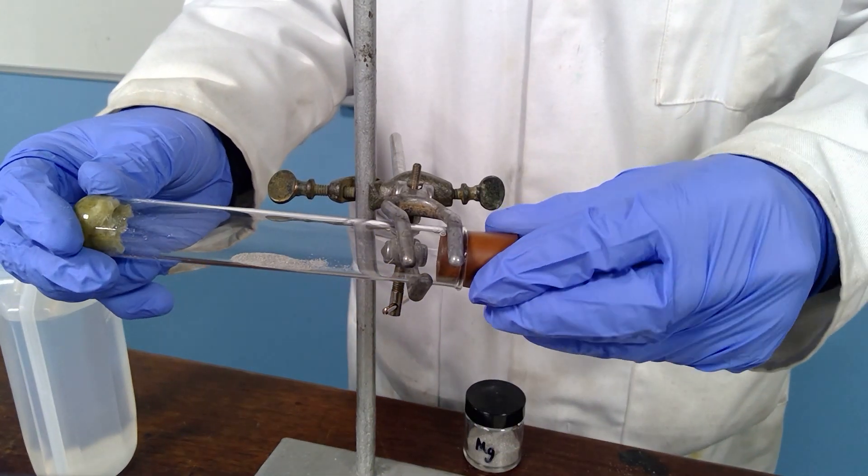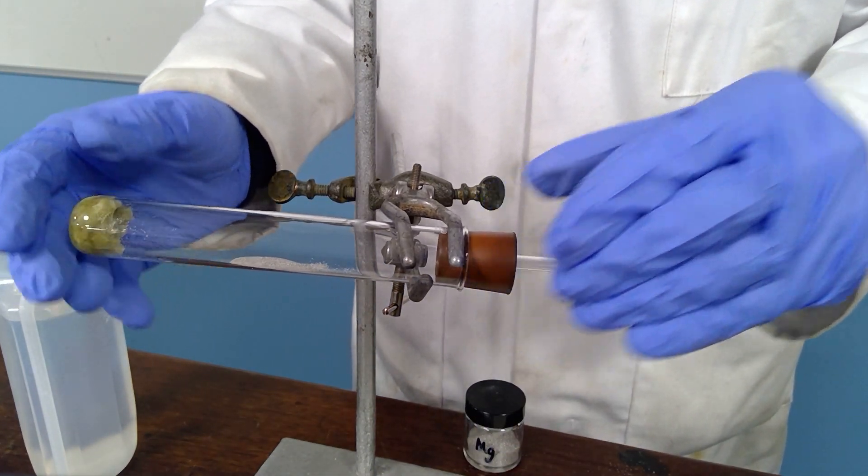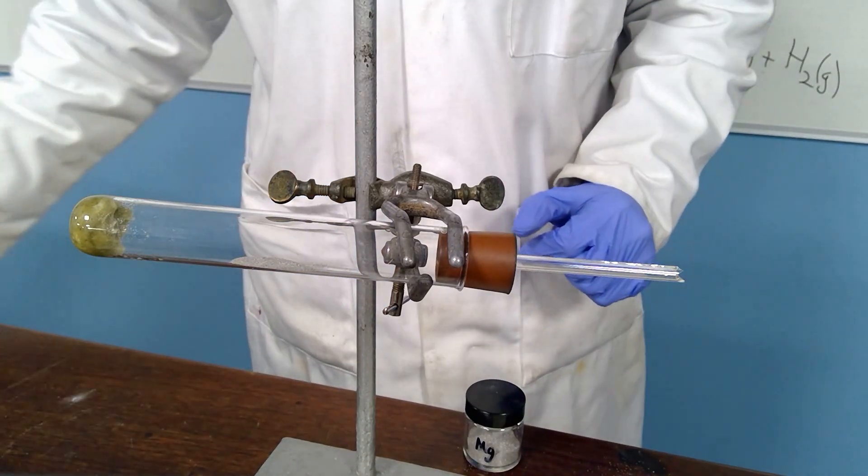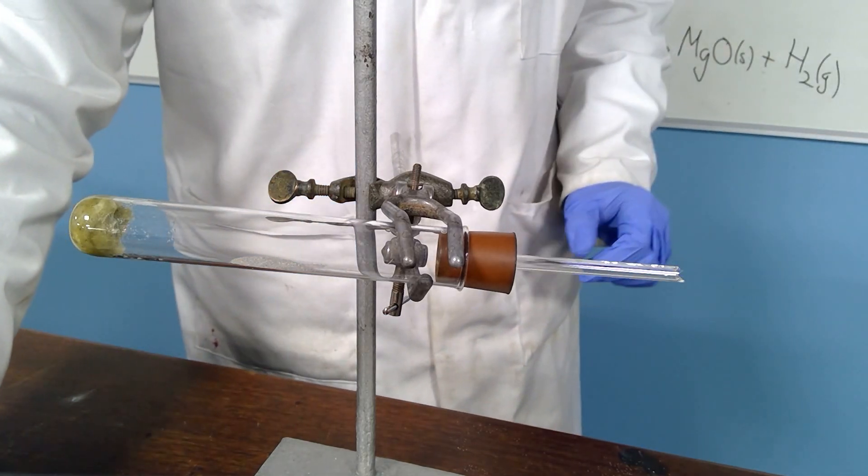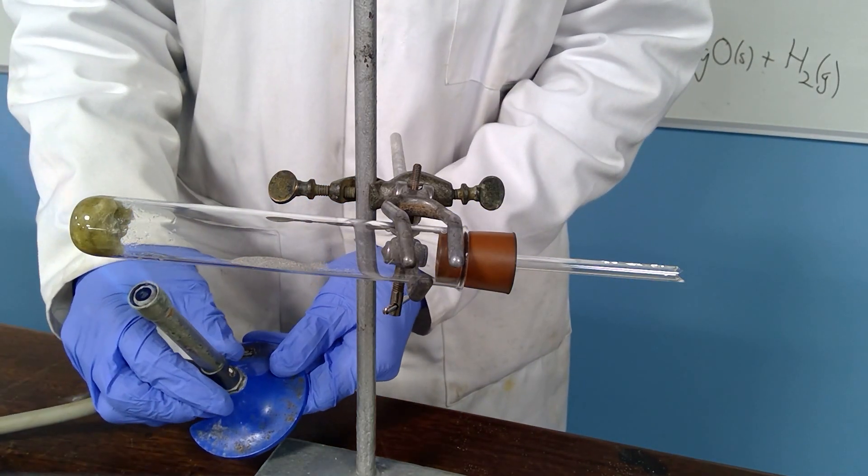I'll place the delivery tube back onto the boiling tube and we'll heat this combination. So first of all, I'm going to heat the magnesium.